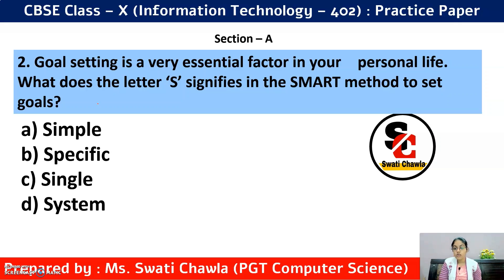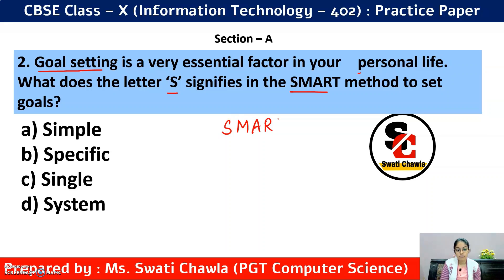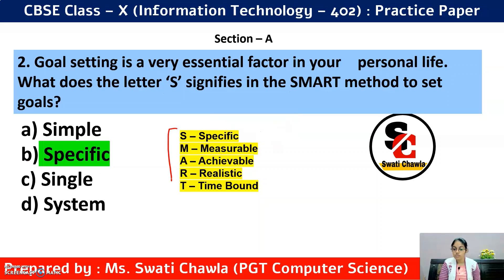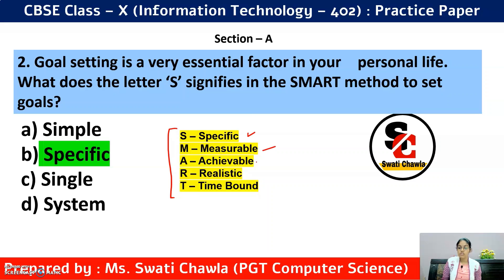Next question is on goal setting, which is a very essential factor in your personal life. In the SMART method of goal setting, what does 'S' signify? Options are: A — Simple, B — Specific, C — Single, D — System. The correct answer is option B, that is Specific. The full form of SMART is: S — Specific, M — Measurable, A — Achievable, R — Realistic, T — Time Bound.